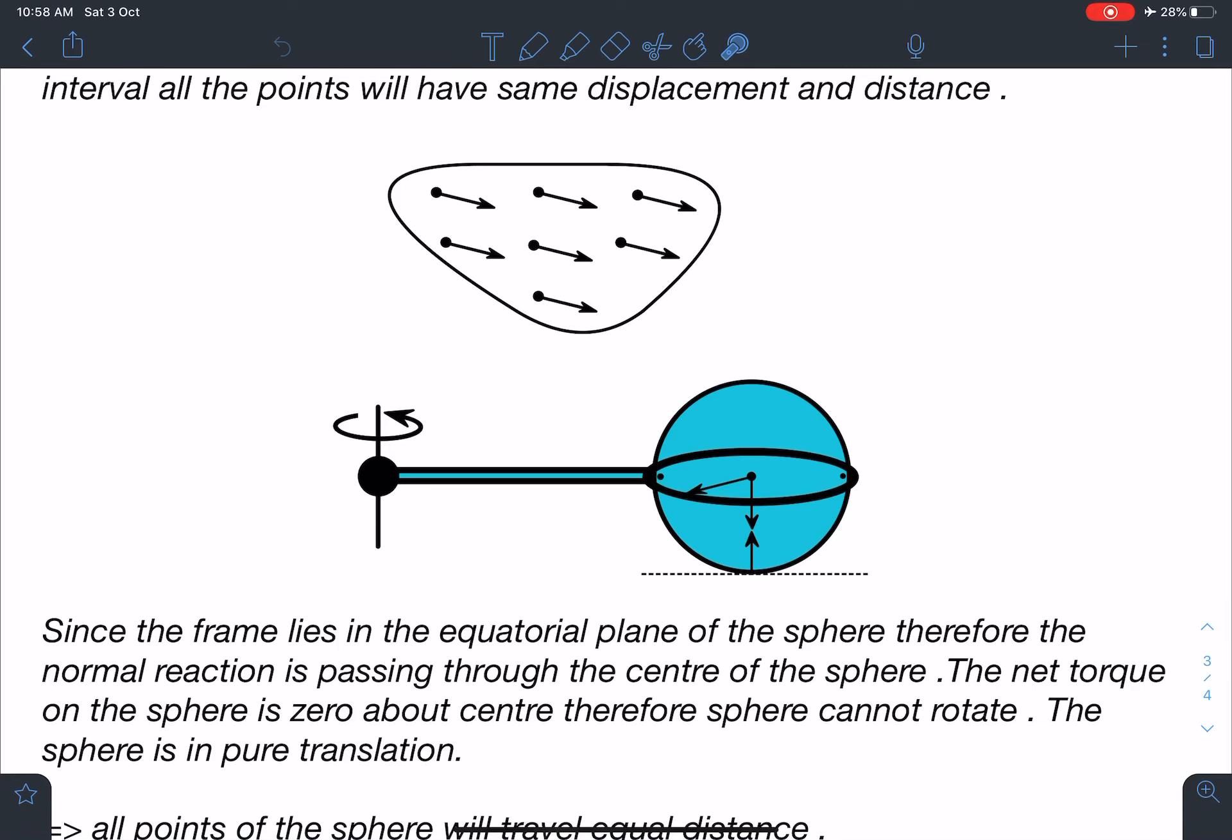Therefore the normal reaction is passing through the center. So normal reaction is going to be passing through the center due to this frame and the sphere.